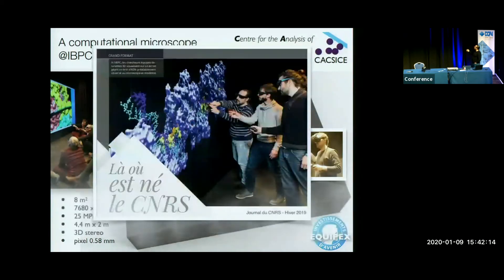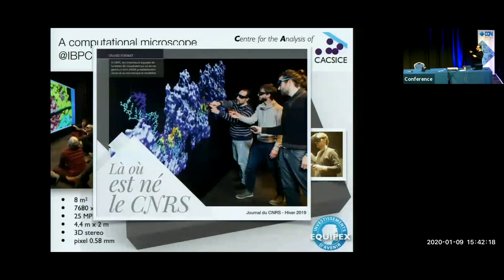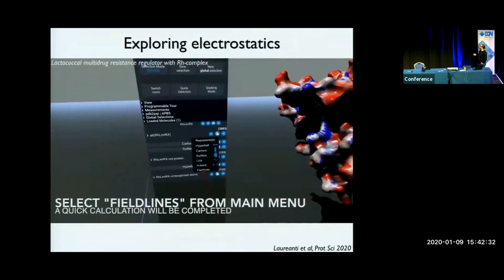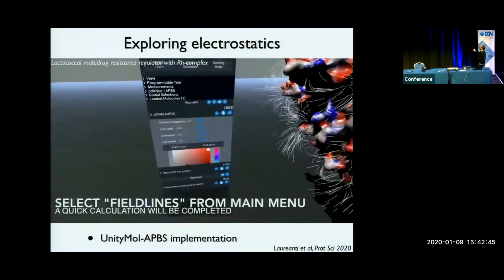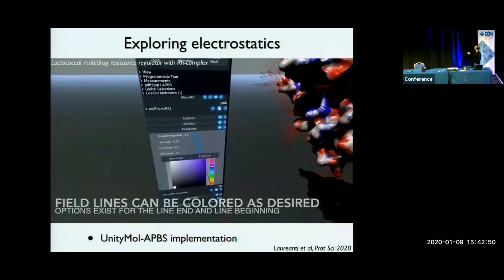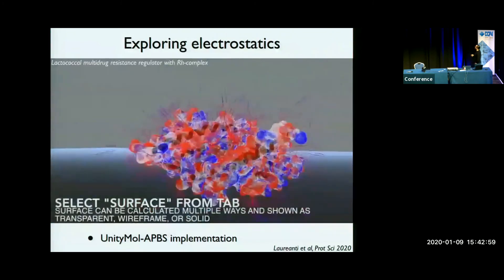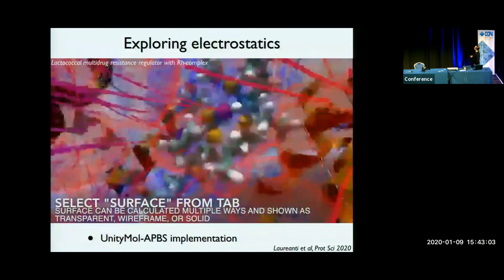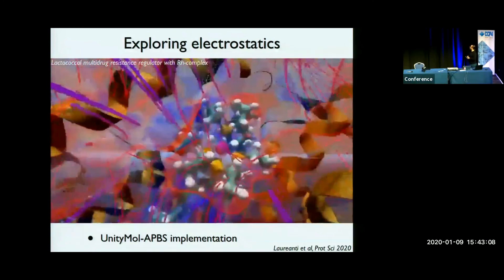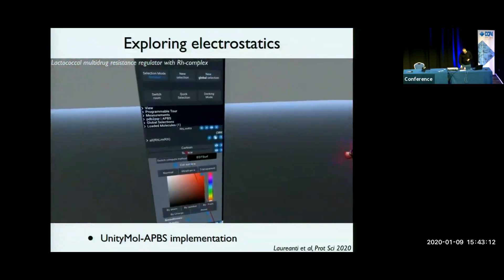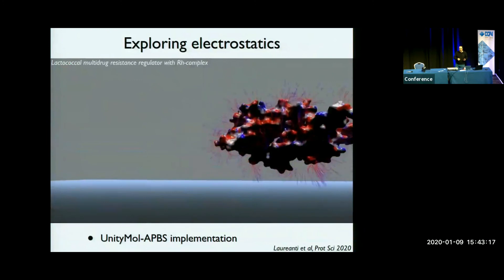A second brief example of data exploration is about electrostatics data. We had a collaboration with Nathan Baker, who developed the APBS software to calculate electrostatic potentials. You can run the calculations from UnityMol and then explore the results — for instance, showing the electrostatic field as animated field lines. This is a cocktail multi-drug resistance regulator with a rhodium complex inside, and you can follow the field lines going toward the rhodium complex. Unfortunately, because the video is compressed it has some trouble reproducing the grid views. This is still somewhat static pre-calculated data that you don't change on the fly.